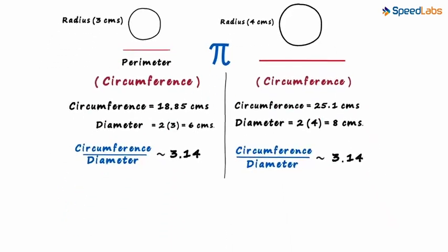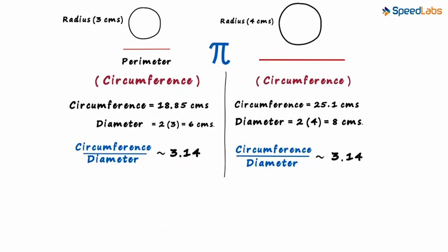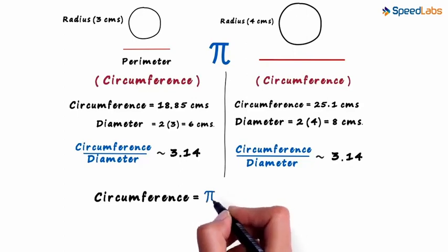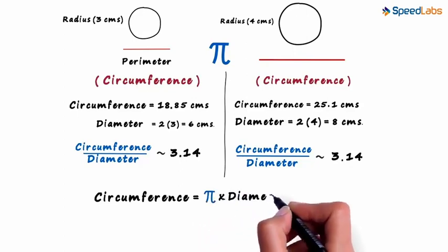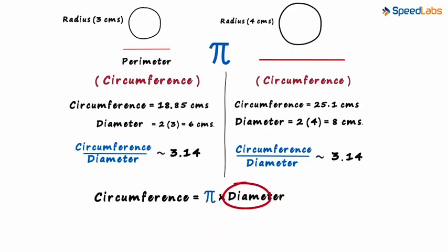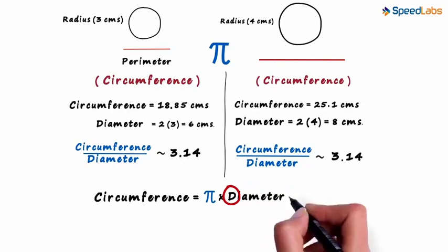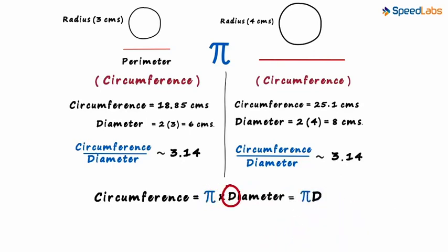Now let's zoom out and deduce a formula for the circumference. As the circumference by diameter equals pi, we can say that the circumference of a circle equals pi multiplied by the diameter. If we call the diameter D, then the formula can be written as pi multiplied by D.